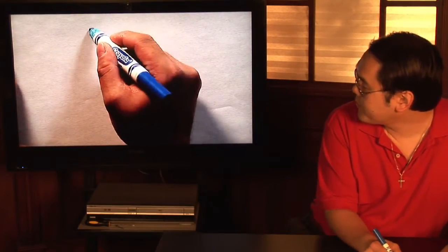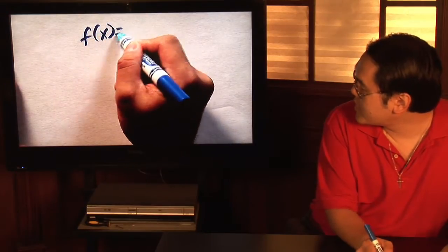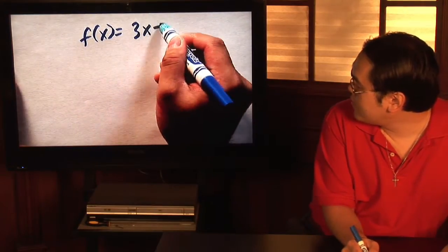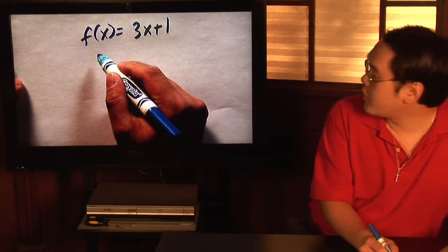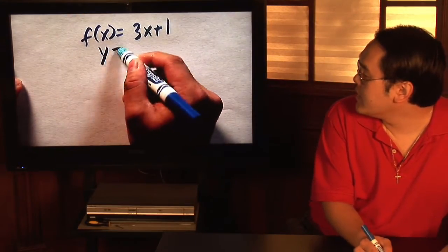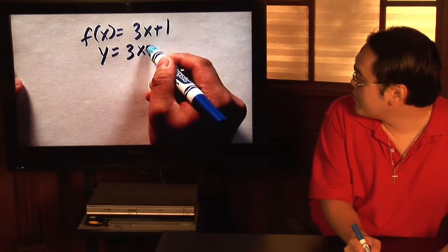Suppose you want to find out the inverse of f of x equals 3x plus 1. Now, again, we're going to follow the steps that we just mentioned. First, replace f of x with y equals 3x plus 1.